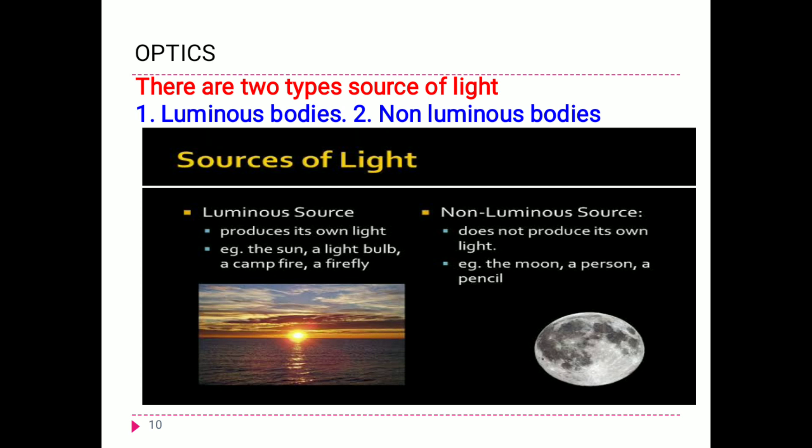What is a non-luminous source? Those which do not produce their own light are called non-luminous sources. Examples are moon, person, pencil, mountain, wall — all materials which do not produce their own light are called non-luminous sources.